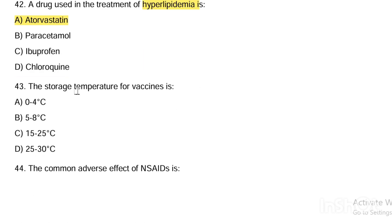Next question. The storage temperature for vaccines is: Option A, 0–4°C. Option B, 5–8°C. Option C, 15–25°C. Option D, 25–30°C. Answer is Option A — 0–4 degrees Celsius.